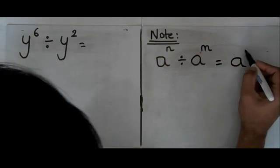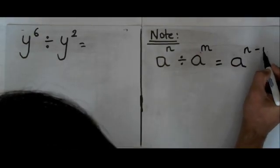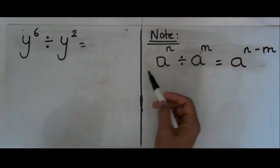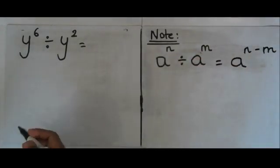So a just once, and then we're just going to take away the power, so n take away m. So we're going to use this index law to solve our problem here.